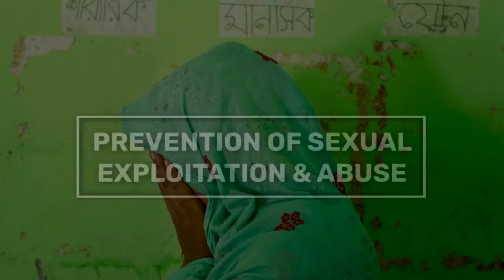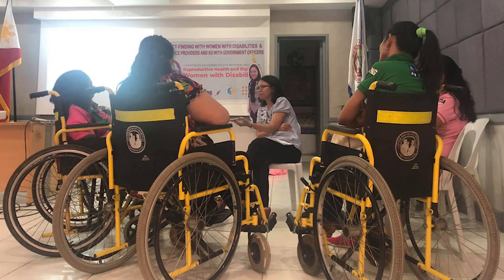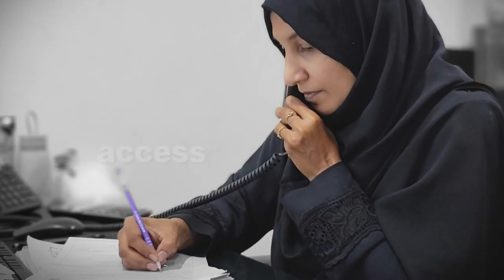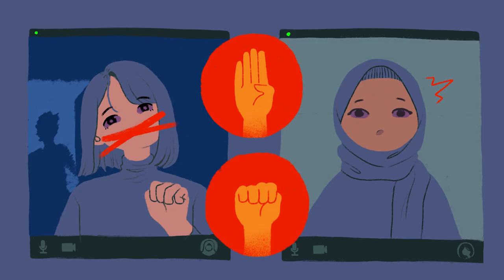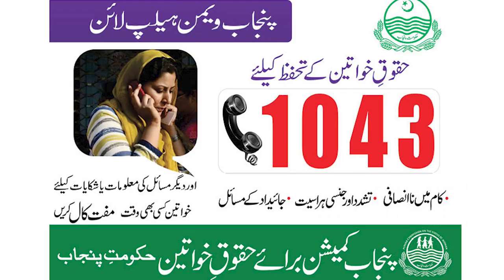Sexual exploitation and abuse are among the most serious breaches of accountability. People should know their rights and entitlements and should have access to effective and confidential mechanisms through which they can report complaints and share information and concerns regarding their protection.